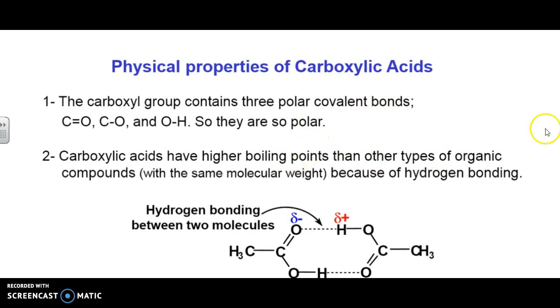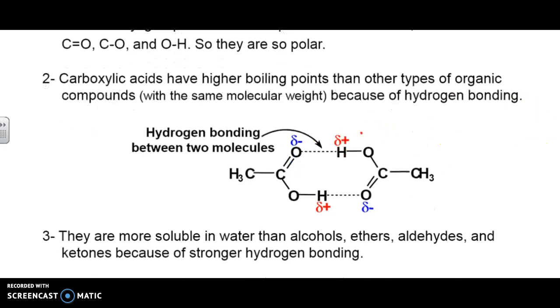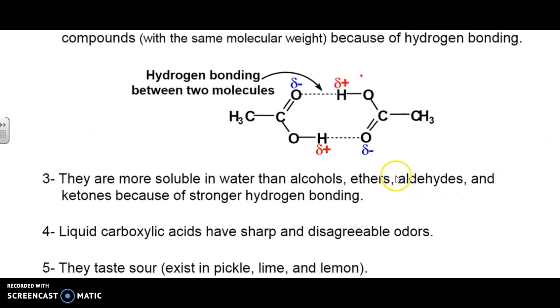Now, this is considered a polar compound because it's got polar bonds all over the place. Between the carbon double bonded O, carbon single bonded O, and the oxygen to the hydrogen. As a result, there's bonding that occurs in here. Because there's hydrogen bonding, you're going to have a higher boiling point than expected. They're also going to be more soluble in water than everything else because of the strong hydrogen bonding.